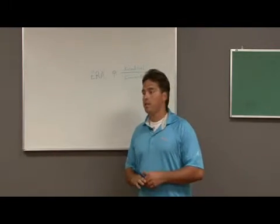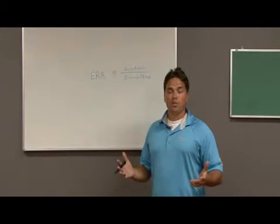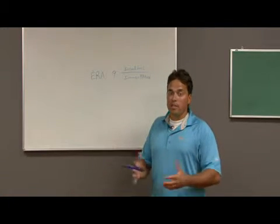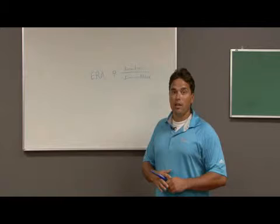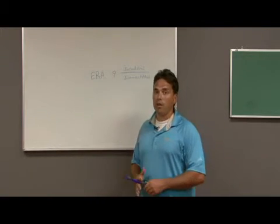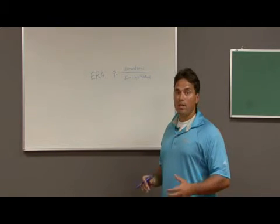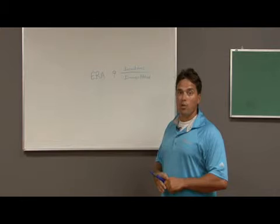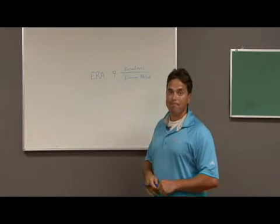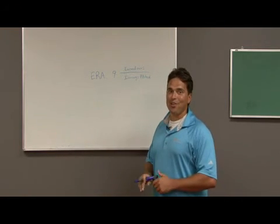A good ERA — an excellent ERA — would be in the ones or twos, so one point seven nine is excellent. In other words, it's basically you're giving up one point seven nine runs per nine innings, and that's really what ERA is. So if a pitcher has a two point five ERA, that's excellent as well — that's two point five runs on average he gives up per nine innings. My name is Jamie Savalas and this is Earned Run Average.